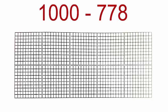Your problem asks you to take away 778 from 1000. Look carefully at your lab observation sheet. The number 1000 has been represented by a grid. Each small square represents 1. So you have 1000 small squares.